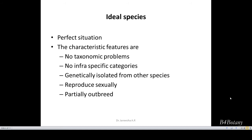They are genetically isolated from other species. They reproduce sexually and are partially outbreeding. Then such a species is known as an ideal species. So this is a perfect situation — these are the characteristics of a species.